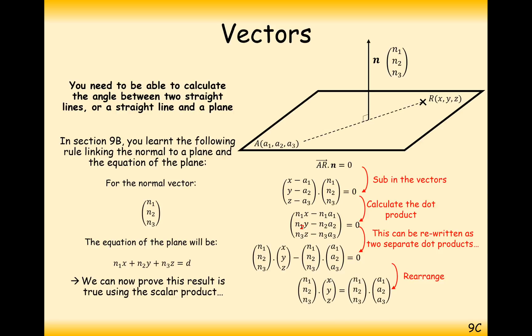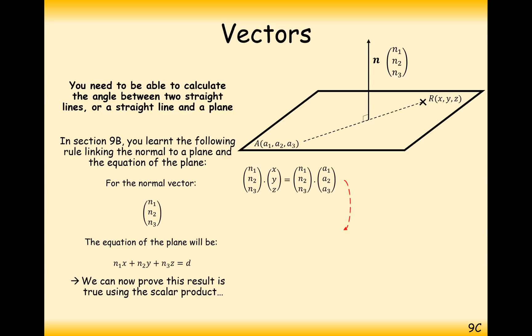And then split up the multiplication of this with a dot product as well. And then move the subtracted part onto the other side, so n1, n2, n3 dotted with x, y, z equals n1, n2, n3 dotted with a1, a2, a3. And we're virtually there now.